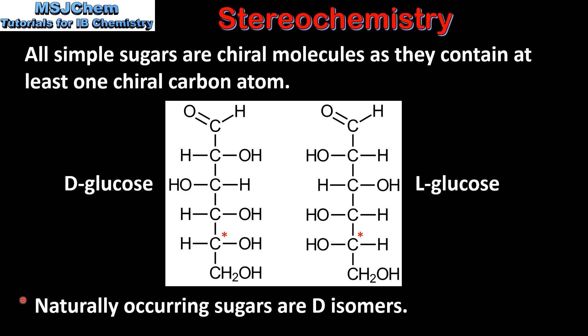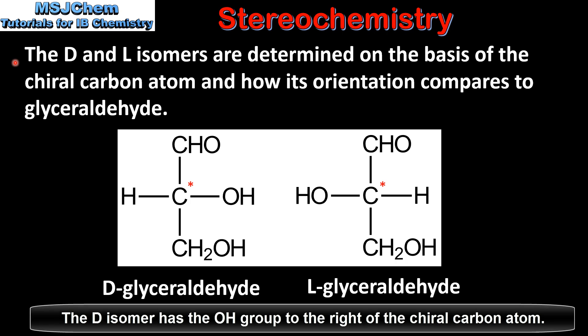Naturally occurring sugars are D-isomers. The D and L isomers are determined on the basis of the chiral carbon atom and how its orientation compares to glyceraldehyde. Here we have the two enantiomers of glyceraldehyde: D-glyceraldehyde on the left and L-glyceraldehyde on the right.